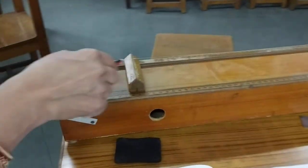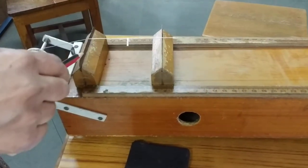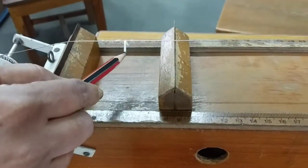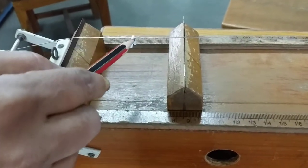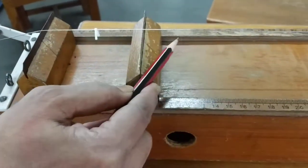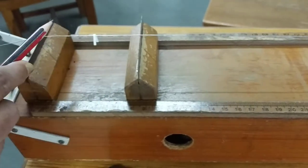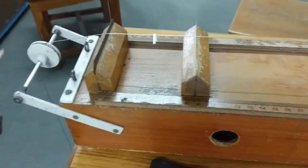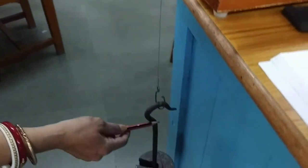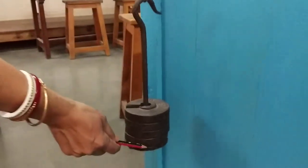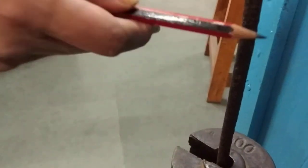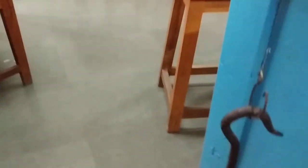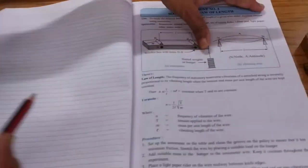These are known as the knife edges. This paper piece is called the rider. Now, this wire, we have put a tension to this wire by using these weights. Each is of 500 grams. The hanger is having a weight of 500 grams. Let us write the tension in our observation table.